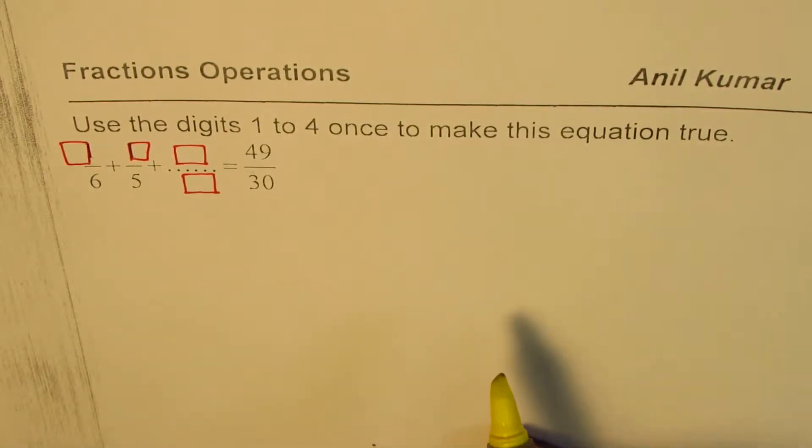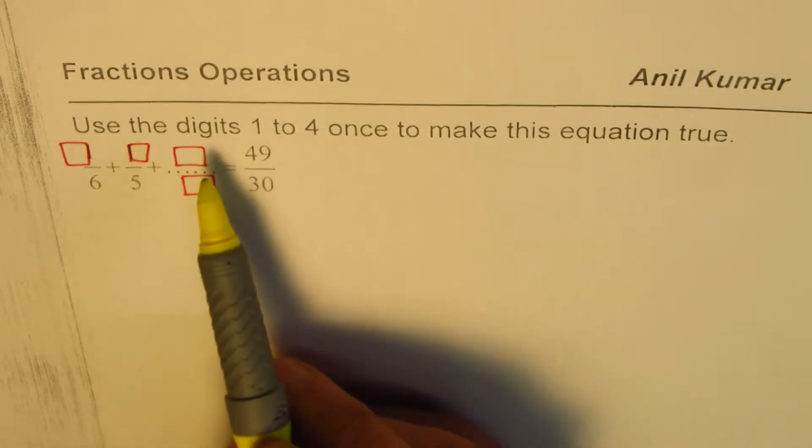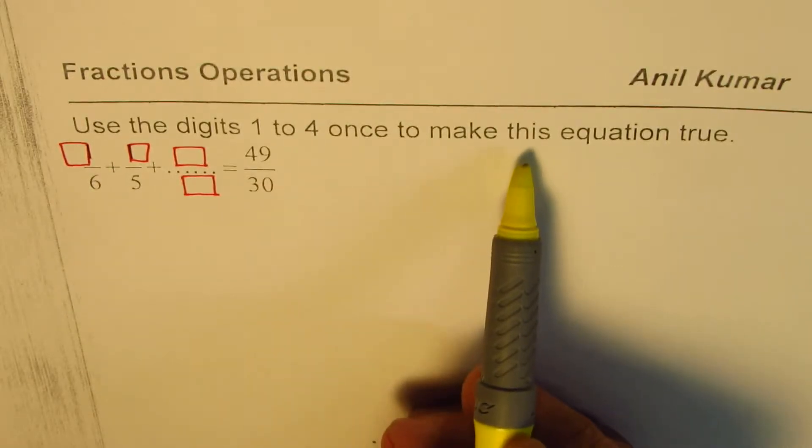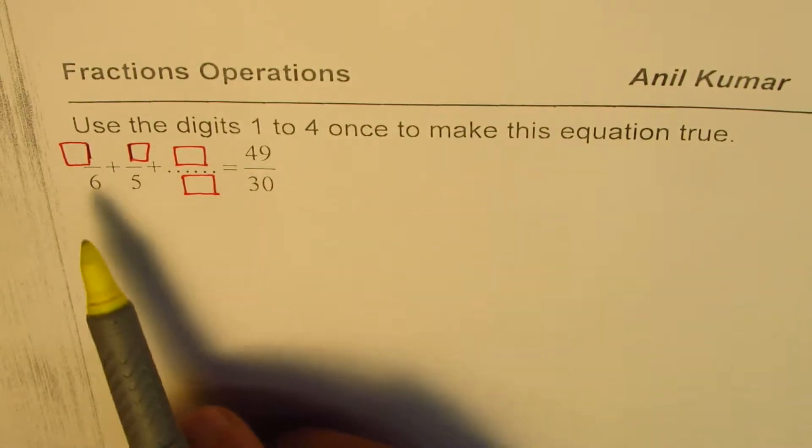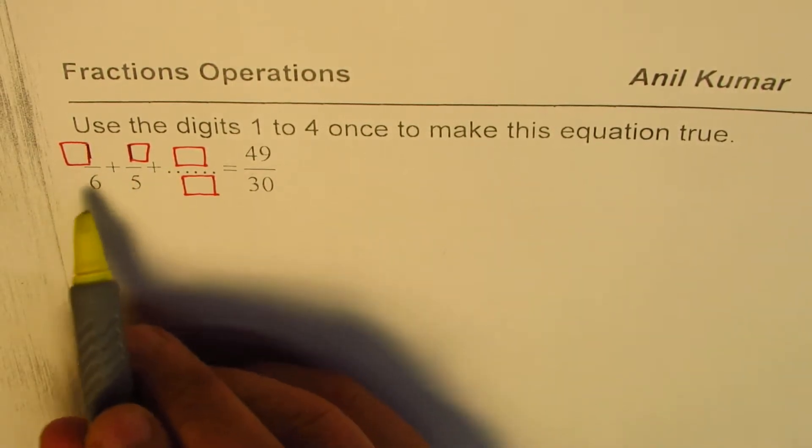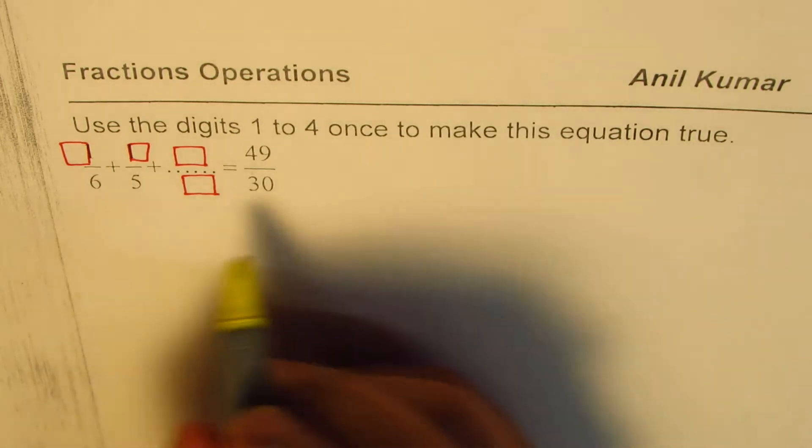Here's the very first one. It says use the digits 1 to 4 once to make this equation true. I'll rewrite this equation as there's some typing error or it's not very clear.